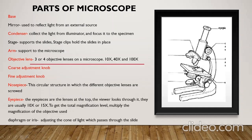The eyepiece lenses are at the top — the viewer looks through it. This is the eyepiece, and here we can see the image in the microscope. The total magnifying power of the microscope is the multiplication of the magnifying capacity of the objective lens and the eyepiece lens.